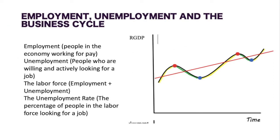Now, employment and unemployment in the business cycle. Employment refers to people in the economy working for pay. Unemployment refers to people who are willing and actively looking for a job. At peaks we would have high employment and low unemployment; at a trough you would have low employment but high unemployment. The labor force includes the employed plus the unemployed — and by unemployed, you have to be actively willing and looking for a job. The unemployment rate is the percentage of people in the labor force that are looking for a job.